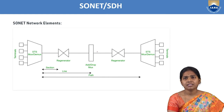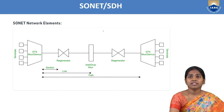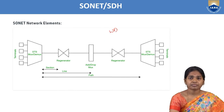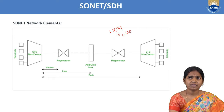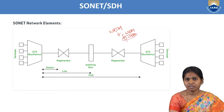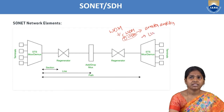After the add drop multiplexer, we use a regenerator again, which amplifies the signal. In optical communication we use wavelength division multiplexing. There are two types: coarse wavelength division multiplexing and dense wavelength division multiplexing. In dense wavelength division multiplexing, we use a booster amplifier, line amplifier, and post amplifier.